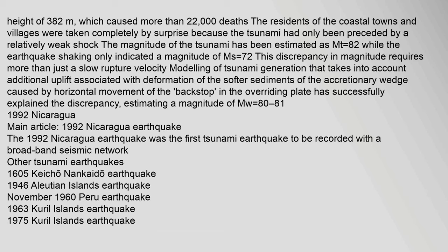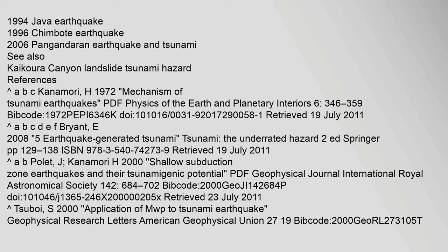Other notable tsunami earthquakes include: the 1605 Keichō Nankaido earthquake, the 1946 Aleutian Islands earthquake, the November 1960 Peru earthquake, the 1963 and 1975 Kuril Islands earthquakes, the 1994 Java earthquake, the 1996 Chimbote earthquake, and the 2006 Pangandaran earthquake and tsunami.